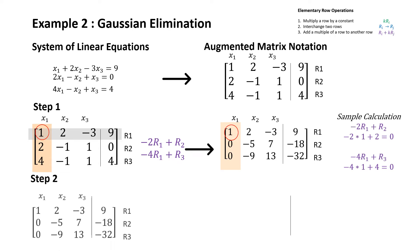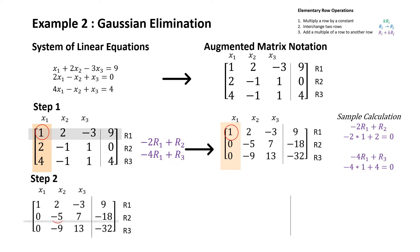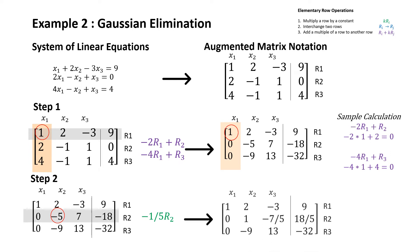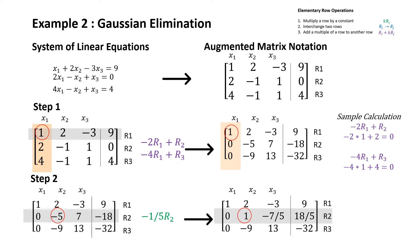Next we move on to column 2, and we need to obtain a 1 in the pivot position. In order to do that, we are going to multiply the pivot row — highlighted in gray — by a constant. This operation leads to the matrix on the right, where we have a 1 in the pivot position, along with a sample calculation.